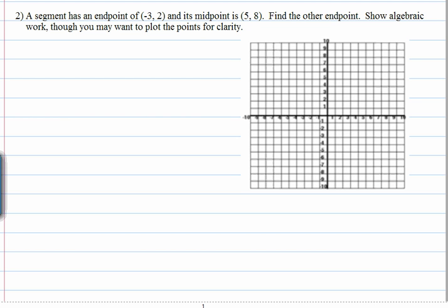Here they have given us the endpoint, one of the endpoints of this segment, that's at negative 3, 2. And the other point that they have given us is actually the midpoint of this segment, that's at 5, 8. So this is one of the endpoints, let's call it A. This is the midpoint, let's call it M.